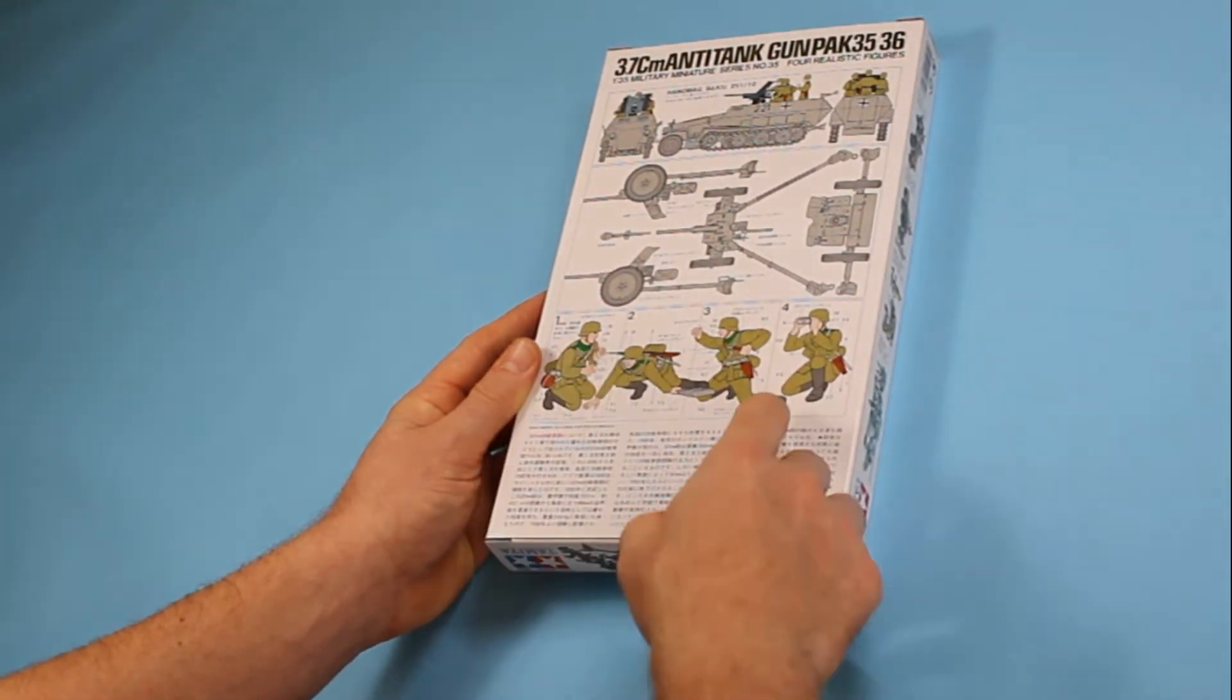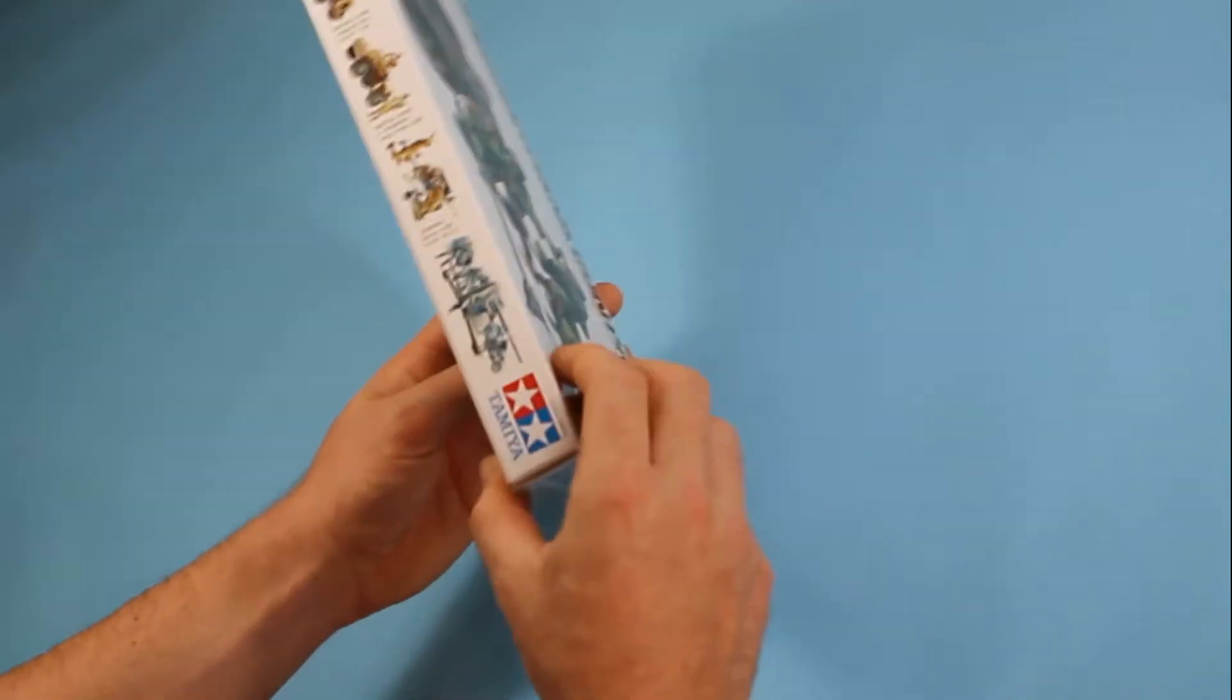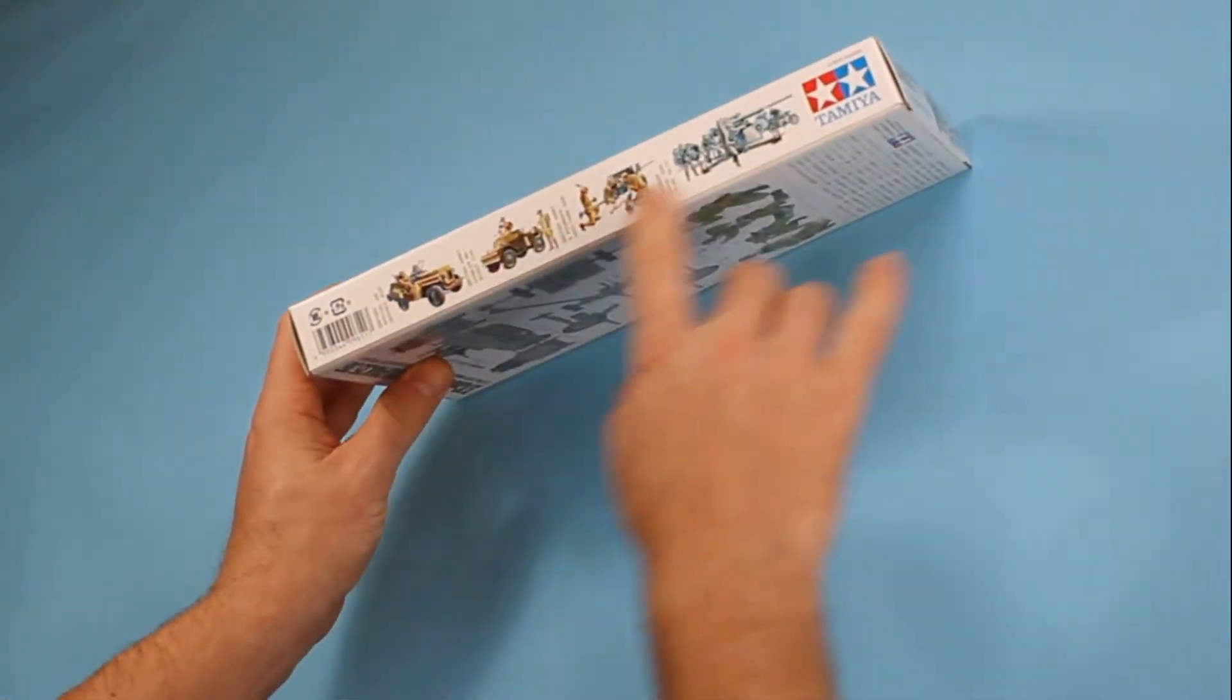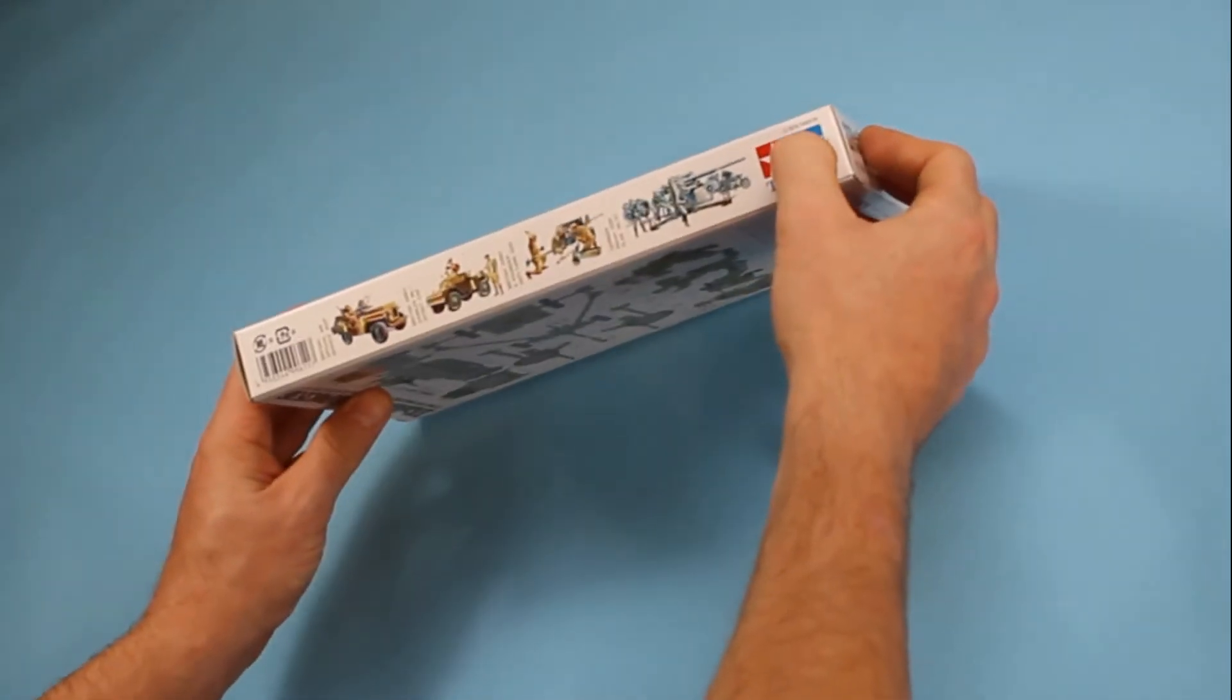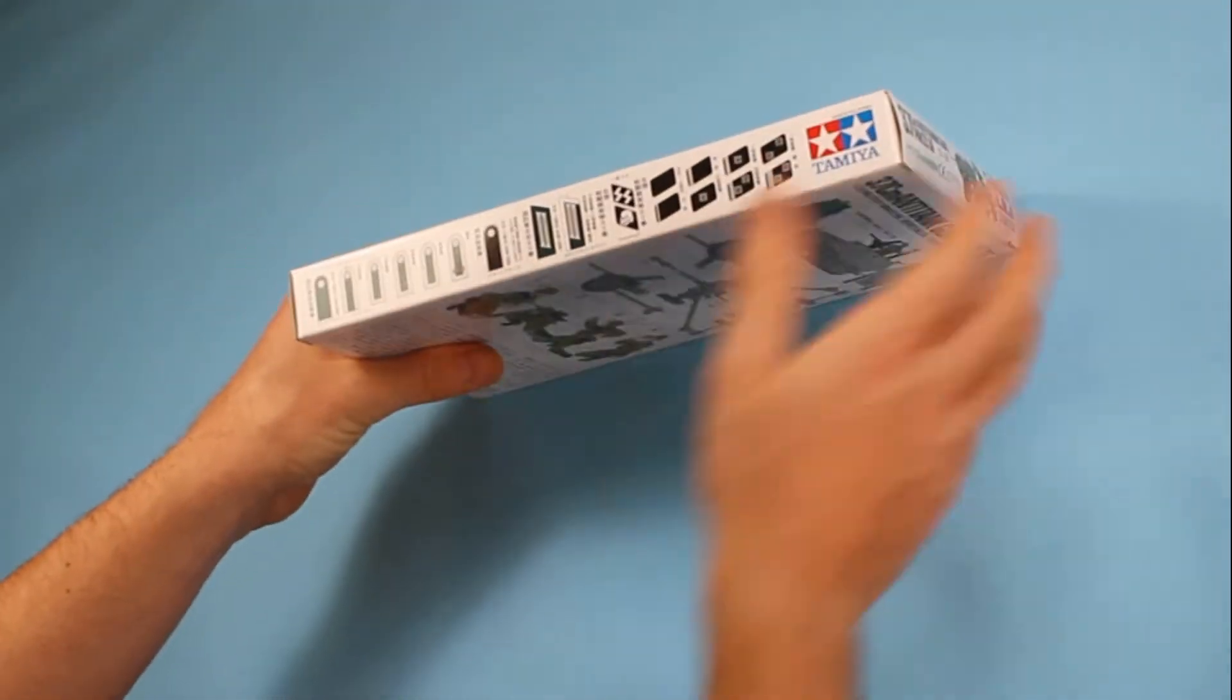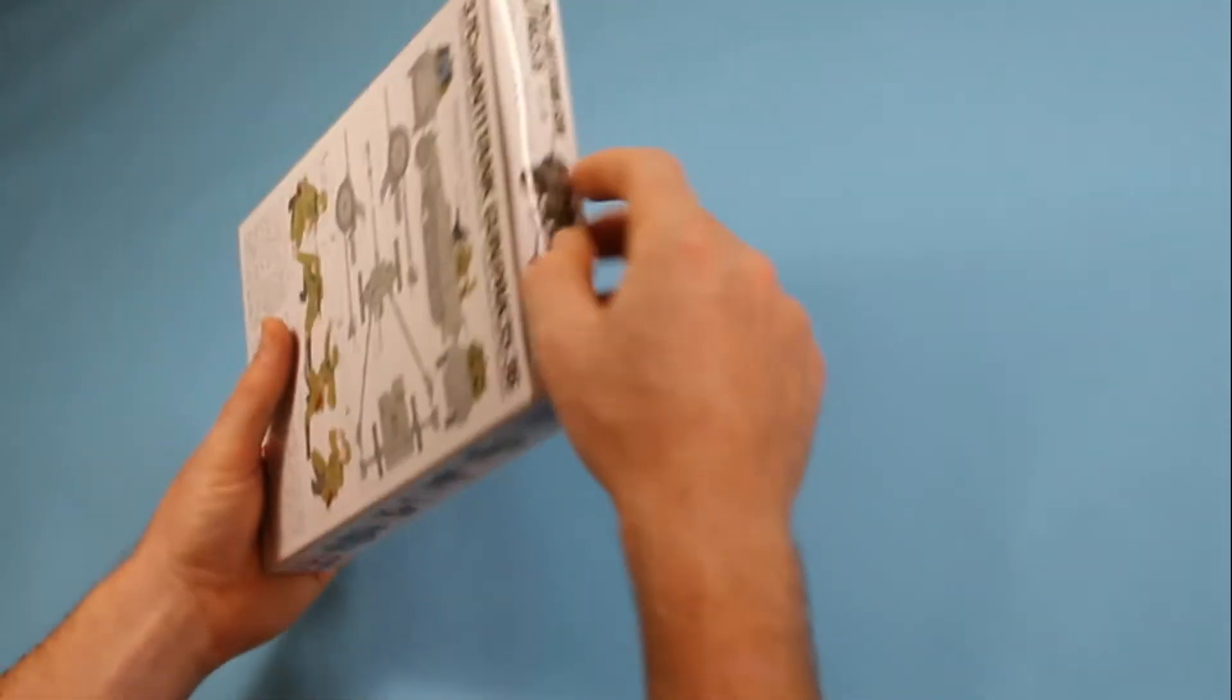You get the figures and a painting guide. This is all in Japanese but that's not a problem, you can usually work out what's being said there. There's a few other kits here that are available in the same series, there's the date 1974.